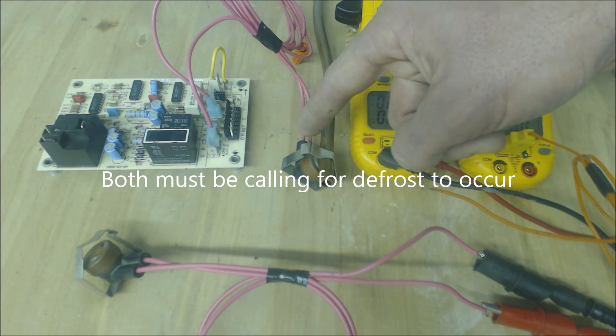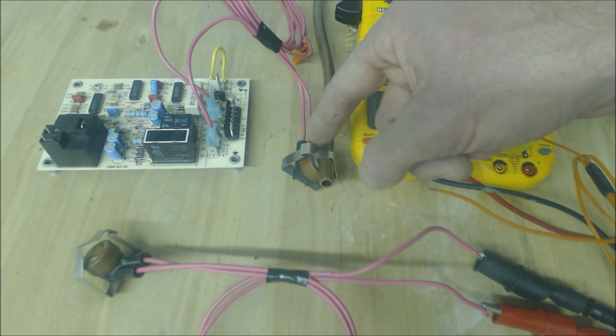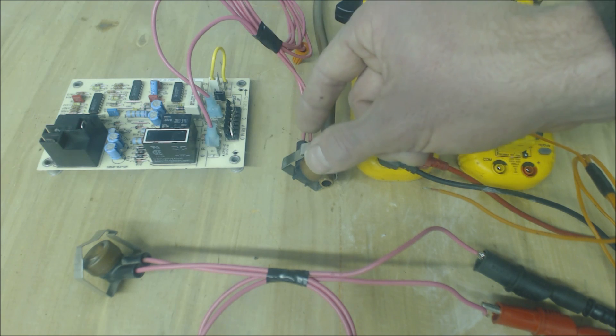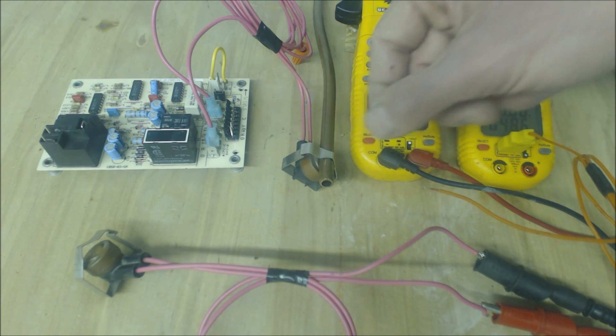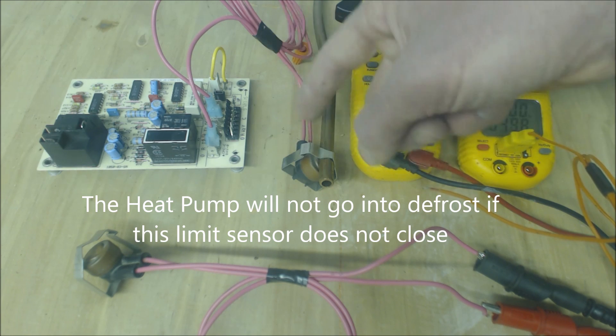Because basically when this is open for this particular defrost sensor, when this is open that means that the outdoor fins are melted. When it's closed, that means that the outdoor fins are frozen. So if you're suspecting that this is a problem, then you really need to take a look at the actual sensor itself.